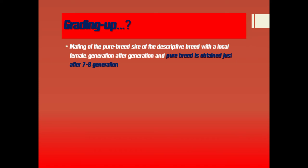Grading up is another method of outbreeding. It refers to mating of a pure breed sire of the desirable breed with a local female. A pure breed exotic sire is selected for breeding with a local female having an undescriptive genetic makeup, so as to produce the pure breed of that sire. This is obtained by seven to eight generations of mating and is used to obtain pure breed animals.